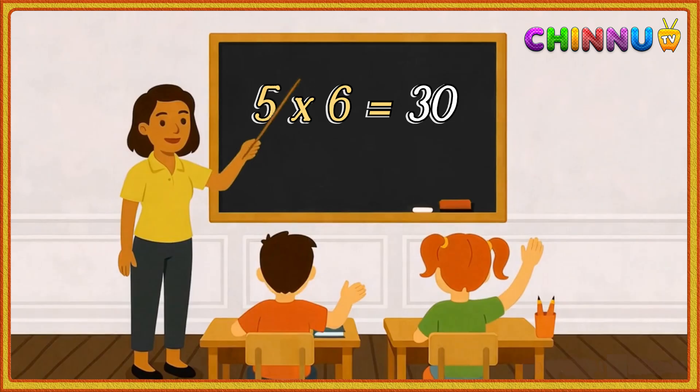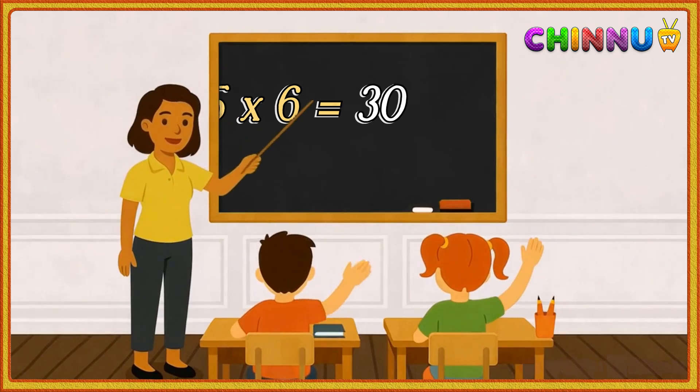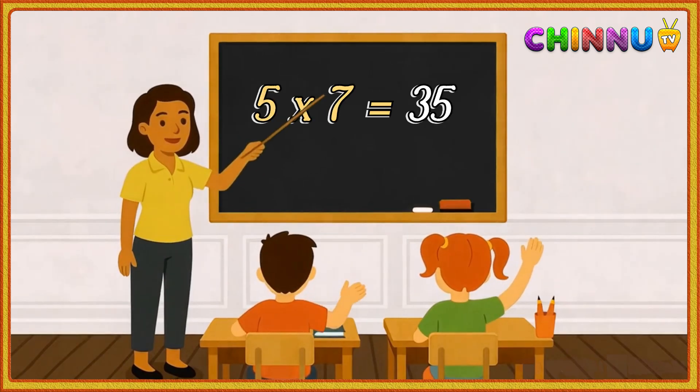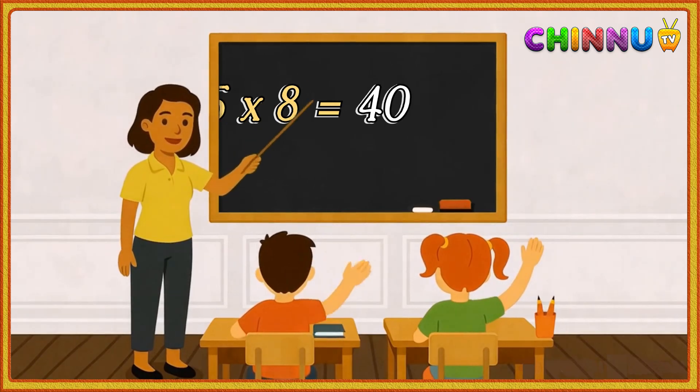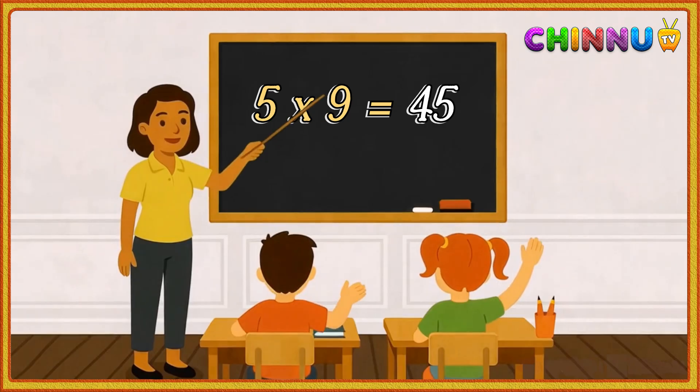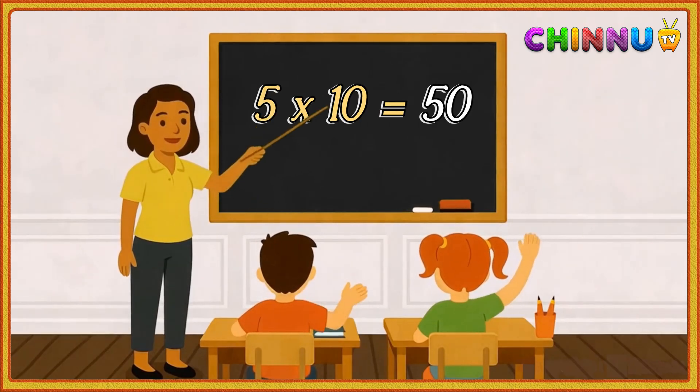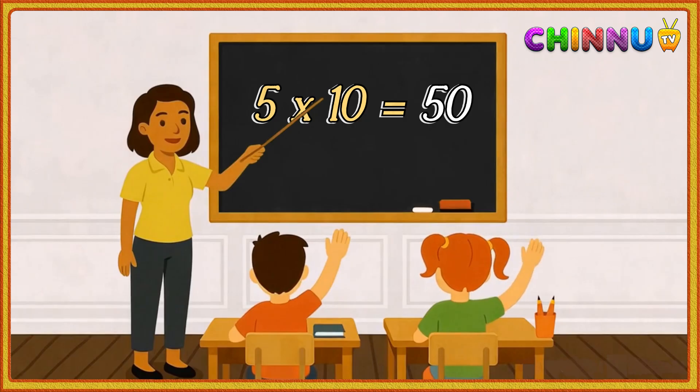Five sixes are thirty, five sevens are thirty-five, five eights are forty, five nines are forty-five, five tens are fifty.